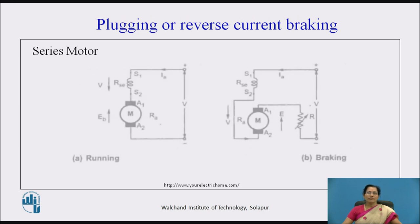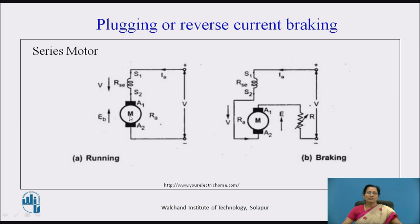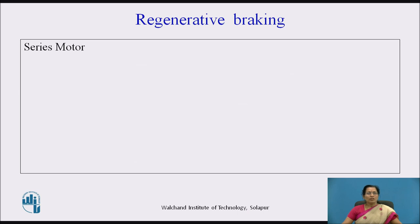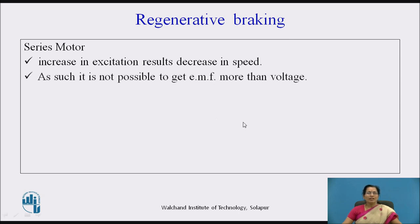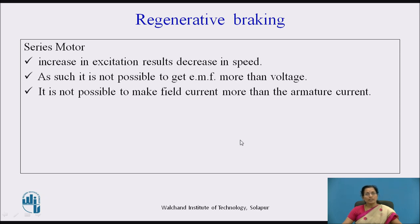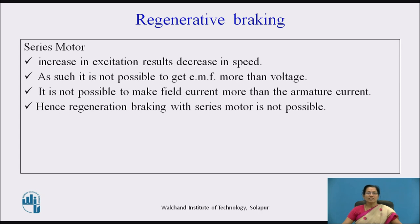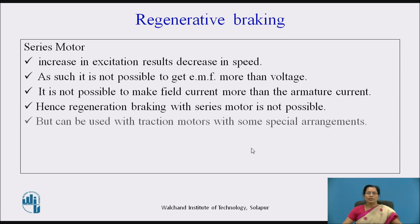For plugging or reverse current braking of a series motor, the current direction is downward, the armature connections are reversed, and a resistance is connected in series with the armature so that the opposite torque is created and braking is applied. For regenerative braking of a series motor, increasing excitation results in a decrease in speed. However, it is not possible to make the field current more than the armature current, so regenerative braking with a series motor is not possible, but can be used with traction motors with some special arrangements.